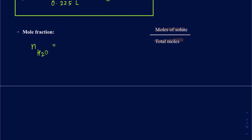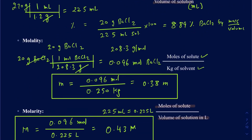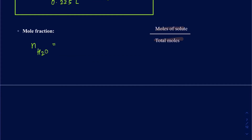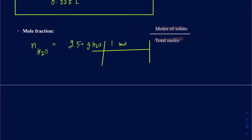We're using 250 grams of water. Using the molar mass — 18 grams per mole — it's 250 divided by 18.01, which gives 13.88 moles of H₂O.